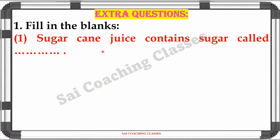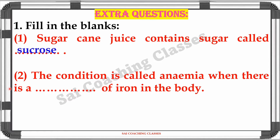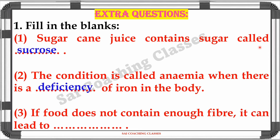You have extra questions here. First question, fill in the blanks. 1. Sugar cane juice contains sugar called sucrose. 2. The condition is called anemia when there is a deficiency of iron in the body. 3. If food does not contain enough fiber, it can lead to constipation.